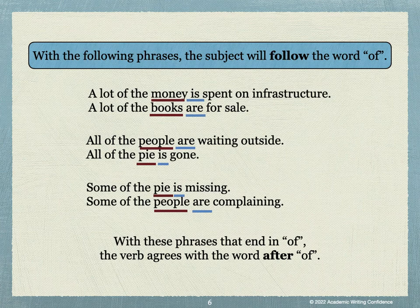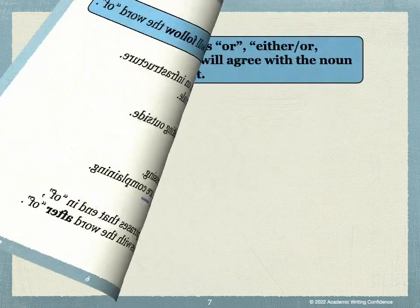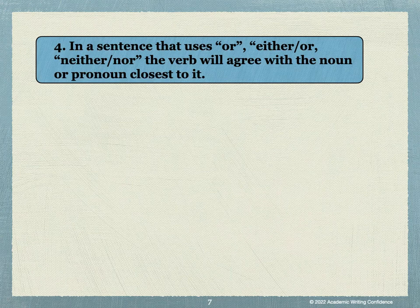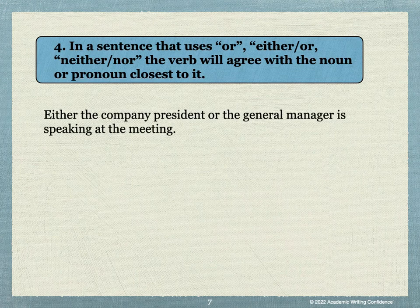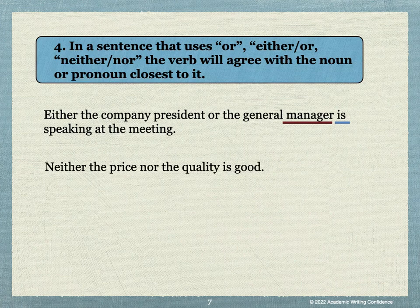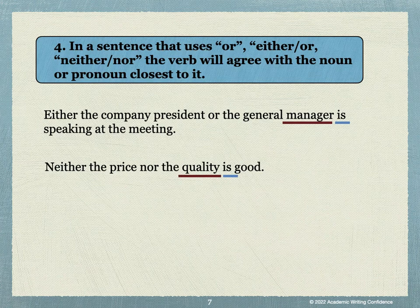The verb agrees with the word after of. Here's another common mistake. In a sentence that uses or, either-or, or neither-nor, the verb will agree with the noun or pronoun closest to it. For example: Either the company president or the general manager is speaking at the meeting. The subject-verb agreement is decided by the closer word, manager — manager is. Another example: Neither the price nor the quality is good. In this case, we use the singular verb after the word quality — quality is good.